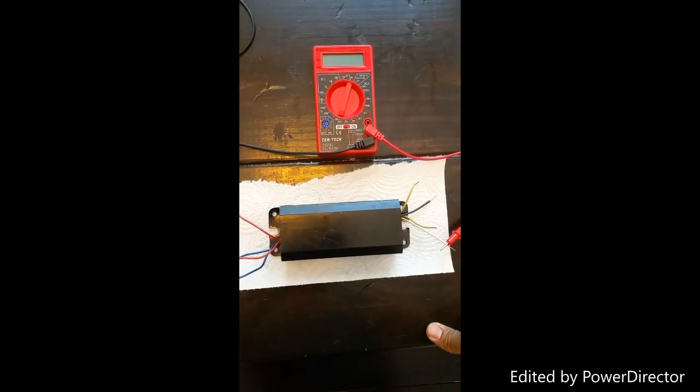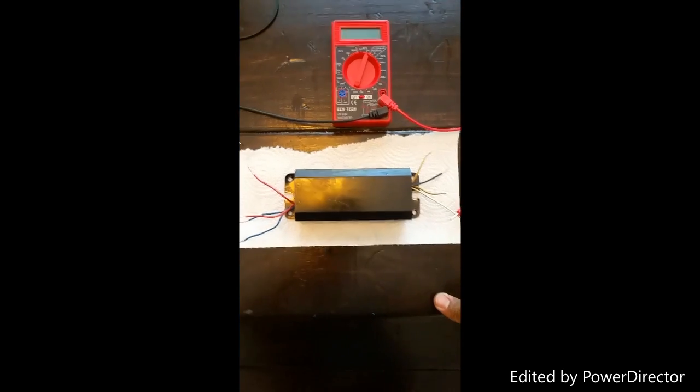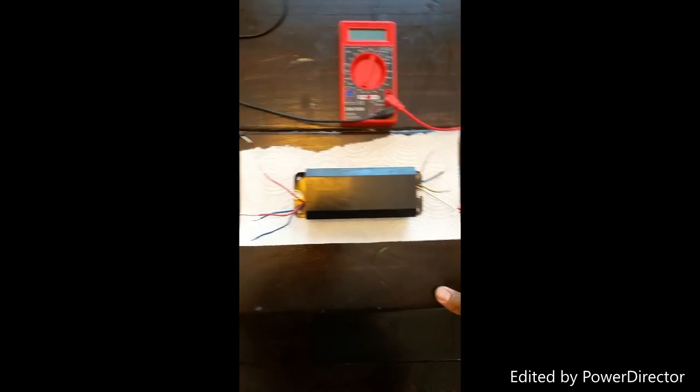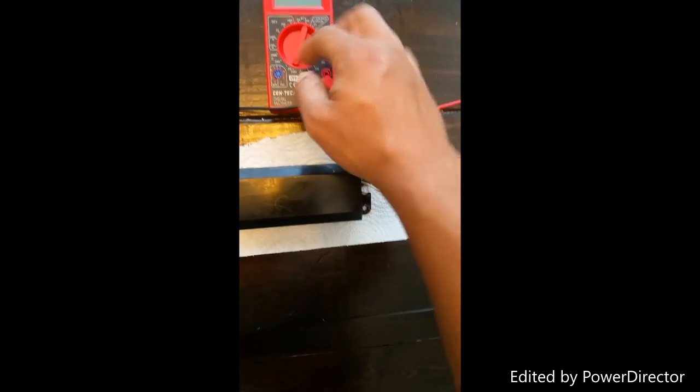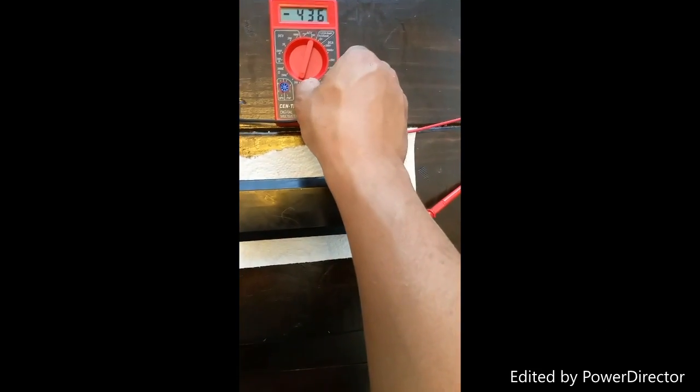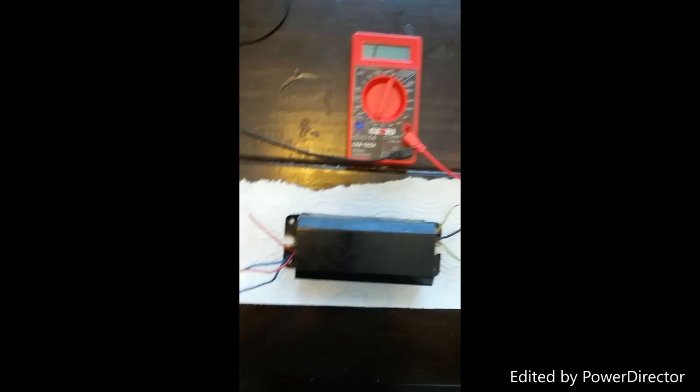I'm going to do a quick video on how to test the ballast in a fluorescent light to see if it's your ballast or some other issue. You want to take your multimeter and set it to ohms, set it about the 1000-2000 range. Mine has a 2000 so I'll just set it there.